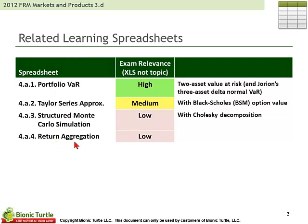In terms of the associated learning spreadsheets, 4A1 is an illustration of portfolio VAR with two assets, and there's a three-asset example as well. The two-asset value at risk uses the traditional mean-variance framework, where each asset is fully described by a mean and a variance or volatility — so volatility is the key risk factor.